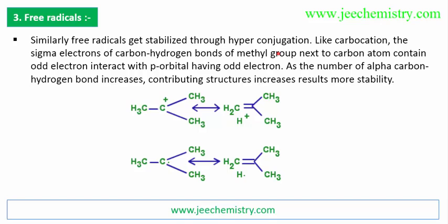Now for free radicals — hyperconjugation happens similarly to carbocations. This H shifts to this position; it becomes minus-plus, forming a bond. This becomes a plus. So one structure is shown here, but there are three more structures. Total four hyperconjugating structures will be there, and one aliphatic structure.